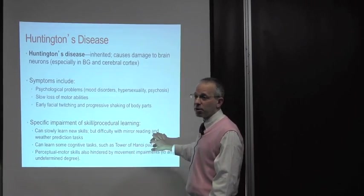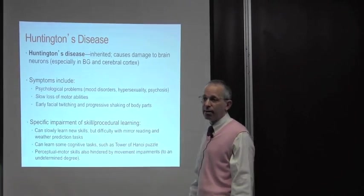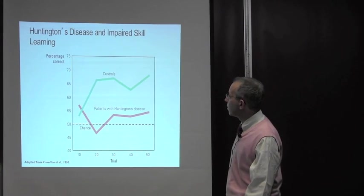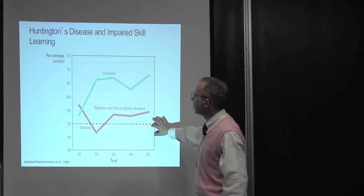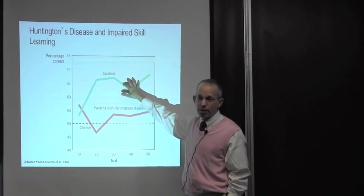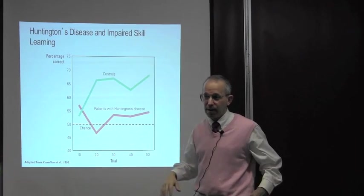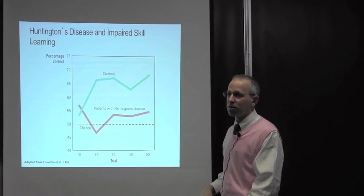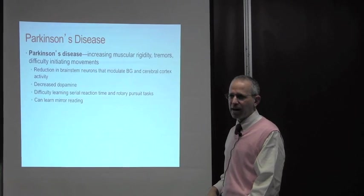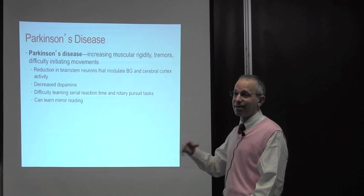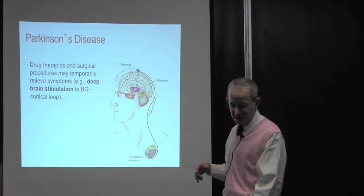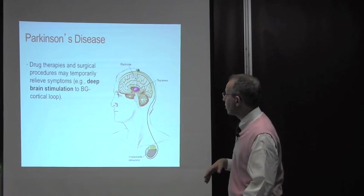They can learn new skills slowly but difficulty with a lot of the tasks we've talked about. Barbara Knowlton, who is one of my collaborators, took some of our tasks and did the weather prediction in Huntington's. Patients with Huntington's who have never learned—controls can learn it quite well. We tried to do some work with Huntington's. They're just so much more impaired than Parkinson's, it's very hard to do work.